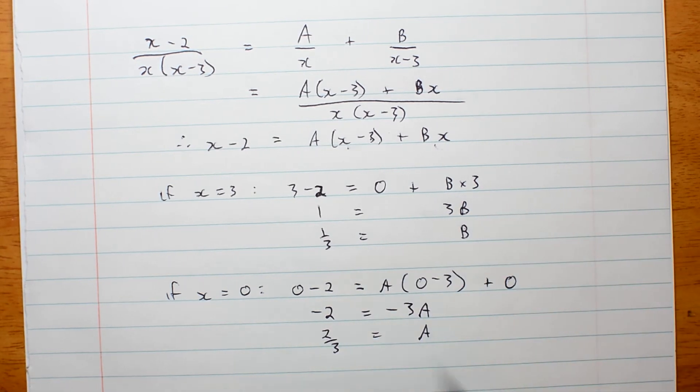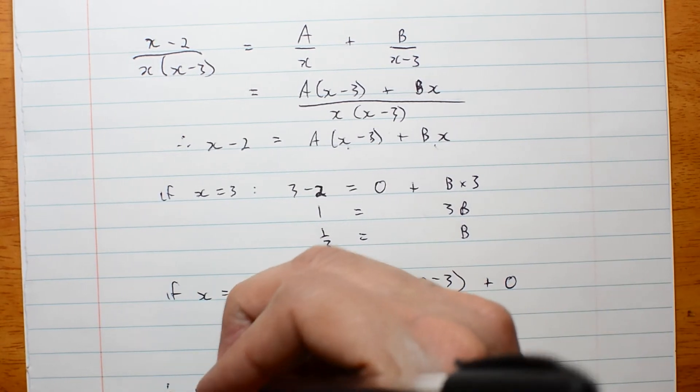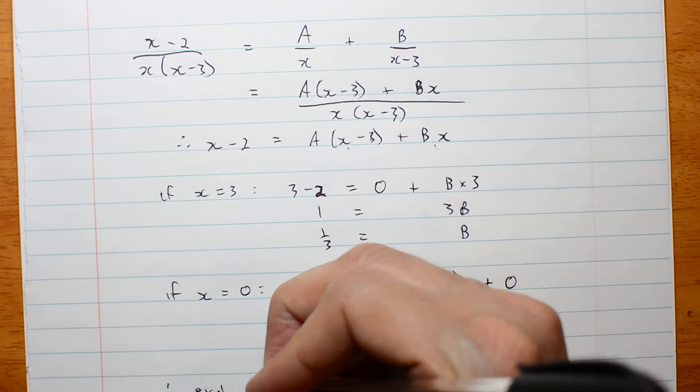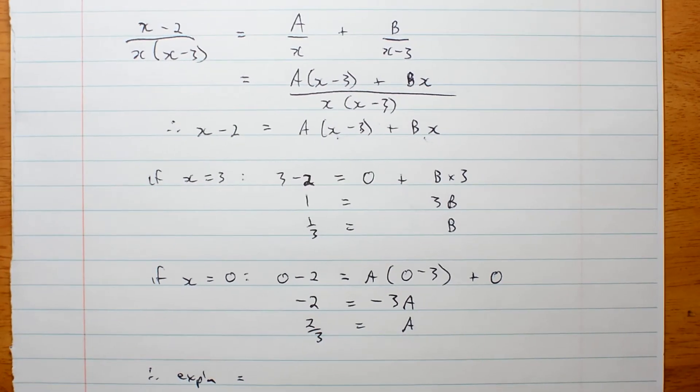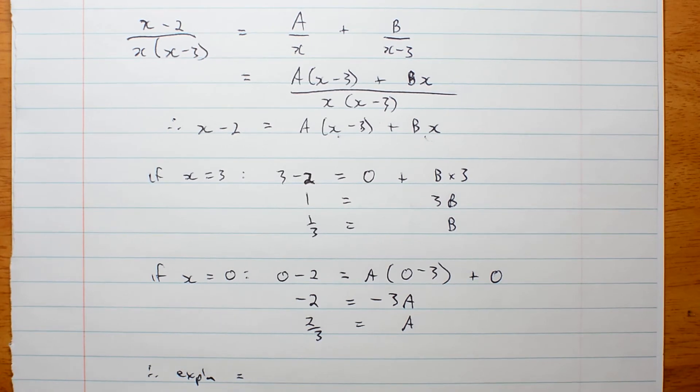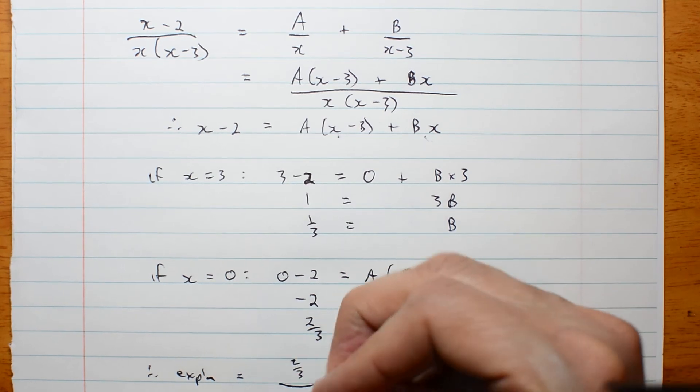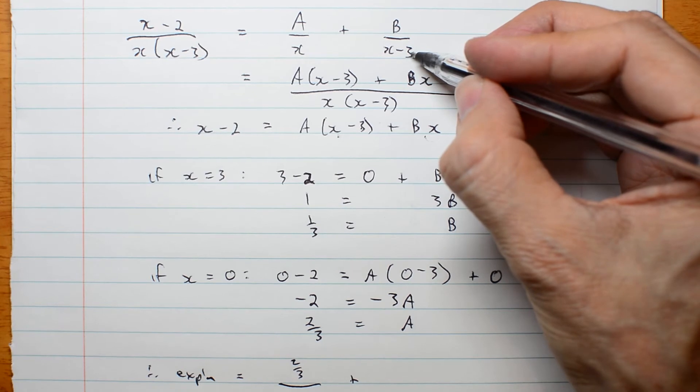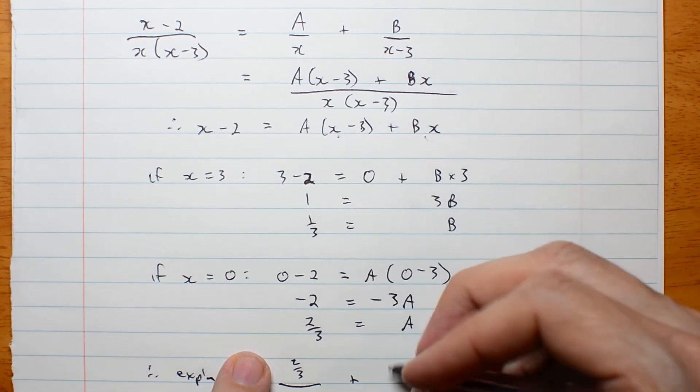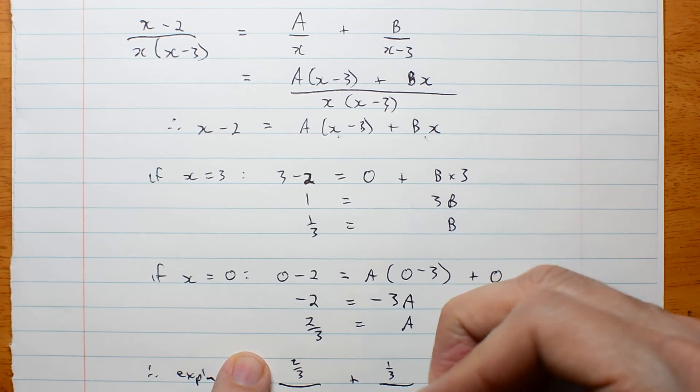Okay, go back to my original expression. My original expression was, I'm not quite going to put this on at once, am I? I'll move it up in a moment. a over x, that was 2 thirds over x plus b over x minus 3. That was 1 third over x minus 3.